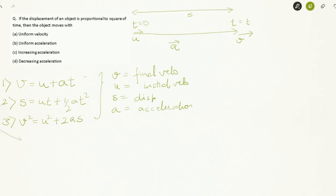If you see this, S equals UT plus half AT squared. And this is proportional to square of time. S is directly proportional to T squared in this equation. Hence this is possible only when it is moving with uniform acceleration.